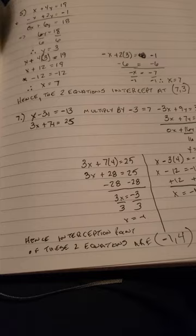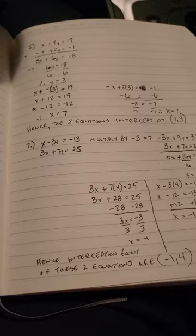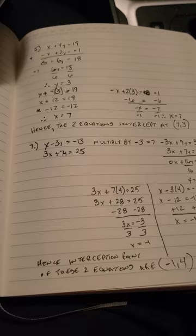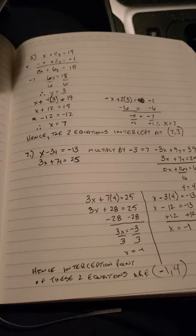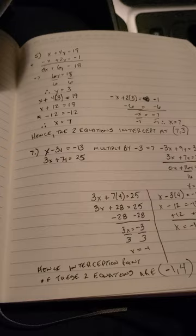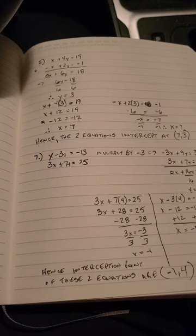And then I can put, hence, interception point of these two equations are negative 1 and 4. Now, when I was looking at your guys' problem, there's another one, number 6. You have X and Y are equal to each other, but the output is different. Those ones are not possible to solve because you don't have points that are going to equal each other to match different outputs.